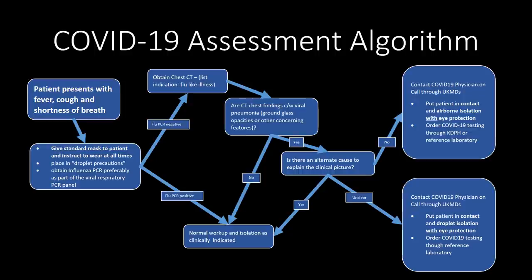For patients under investigation for COVID-19 or presenting with fever, cough, and shortness of breath, we have developed a basic assessment algorithm. When a patient first presents, they can be placed under droplet precautions and given a mask to wear at all times. Workup starts with testing for influenza and other viral respiratory infections, preferably using PCR. If flu is positive, work them up normally. If flu is negative, consider getting a CT — not indicated in all such patients, but if symptoms are severe enough to warrant chest CT and flu is negative, one can be obtained.